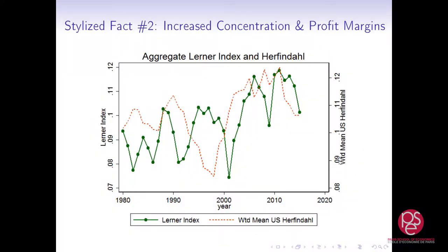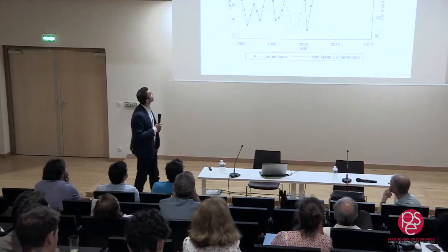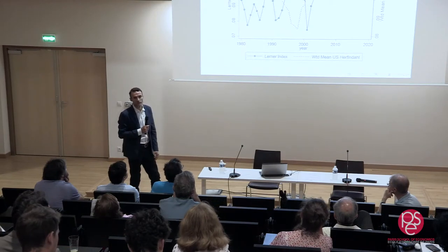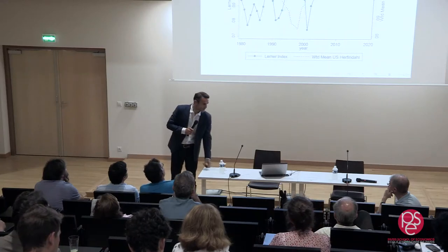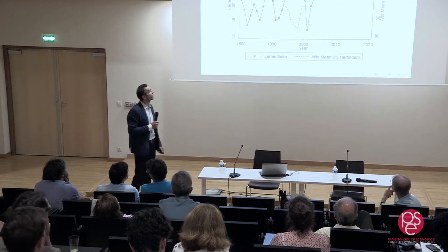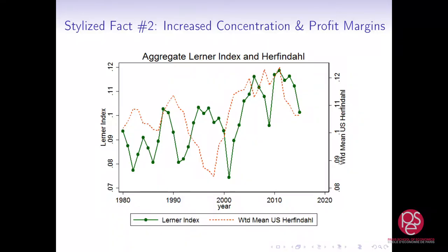This increase in concentration comes together with an increase in profit rates. Here you have the same Herfindahl as before in red, and in green the Lerner index — just a price-cost margin: sales minus cost of goods sold divided by sales. If it's 10%, that means firms are making a profit margin of 10%. You see an increase in the profit rates of US firms over the past 25 years. That's about concentration and profits.